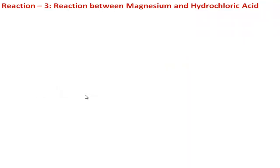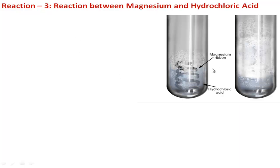Now I will discuss reaction three: the reaction between magnesium and hydrochloric acid. In a test tube, take some hydrochloric acid and insert a piece of magnesium ribbon. You will see bubbles forming. The magnesium ribbon gradually vanishes and more bubbles are created.